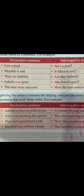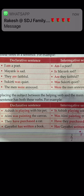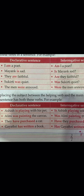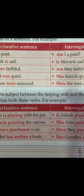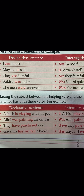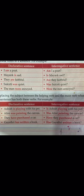When there are two verbs in the sentence, one is the helping verb and the other is the main verb. 'Ashish is playing with his pet' becomes 'Is Ashish playing with his pet?' 'Alini was painting the canvas' becomes 'Was Alini painting the canvas?' 'They have purchased a car' becomes 'Have they purchased a car?' 'Gayatri has written a book' becomes 'Has Gayatri written a book?' This is how we form YES or NO questions, children.